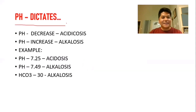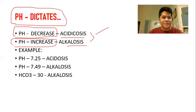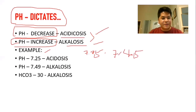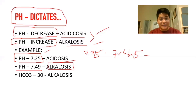The pH dictates whether it is acidosis or alkalosis. If the pH decreases, it turns acidotic — for example, a pH of 7.25 is acidosis. If the pH increases — for example, 7.49 — that is alkalosis. Similarly, if the bicarbs is 30 (above the normal 22-26), it turns alkalotic. If bicarbs decrease, it turns acidosis.